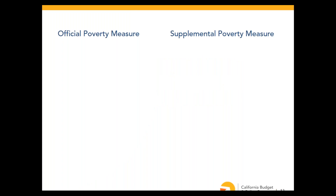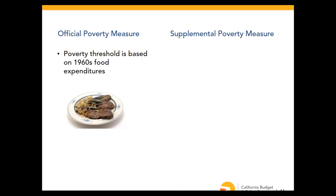The official poverty thresholds were created in the 1960s based on the cost of food for a minimally adequate diet, multiplied by three — because families typically spent a third of their income on food at that time. Since then, the thresholds have only been updated for inflation, not for changes in spending patterns. Today, families spend much less on food and much more on housing, so the official thresholds are no longer meaningfully linked to current costs families face to meet their basic needs.